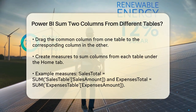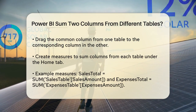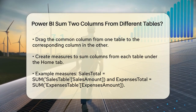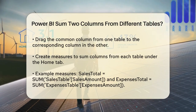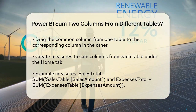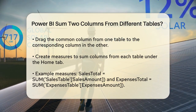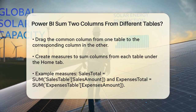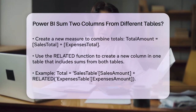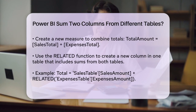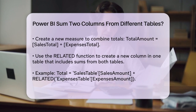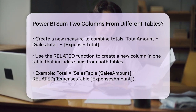Next, you'll create measures to sum the columns from each table. Under the Home tab, click on New Measure. For instance, if you have a Sales table and an Expenses table, you can create measures like this: Sales Total = SUM(Sales[SalesAmount]) and Expenses Total = SUM(Expenses[ExpensesAmount]). Now, to sum these two columns into a single measure, you can create another measure that adds the two totals together: Total Amount = Sales Total + Expenses Total. This Total Amount measure will give you the combined sum of the Sales and Expenses columns from the different tables.